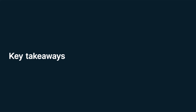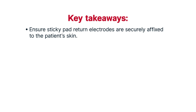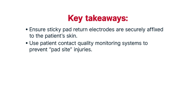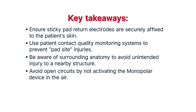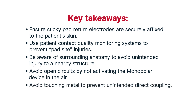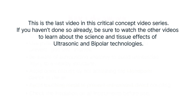Key takeaways and tips. In review, specific measures to reduce risk during electrosurgery include: ensure sticky pad return electrodes are securely affixed to the patient's skin; use patient contact quality monitoring systems to prevent pad site injuries; be aware of surrounding anatomy to avoid unintended injury to a nearby structure; avoid open circuits by not activating the monopolar device in the air; avoid touching metal to prevent unintended direct coupling; check the insulation on all instruments before use. This is the last video in this critical concept video series.